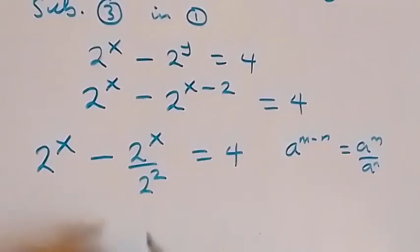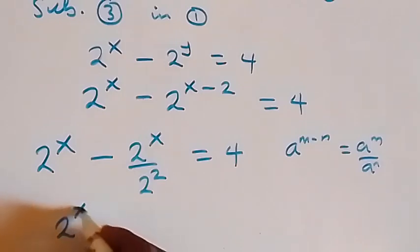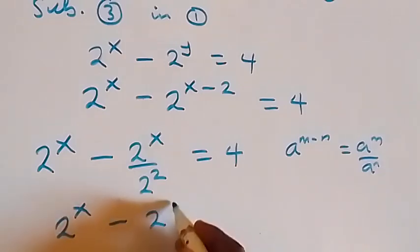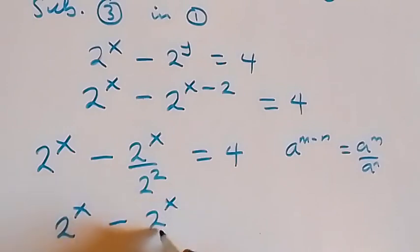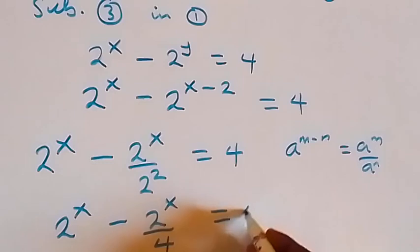Then, 2 raised to power x minus 2 raised to power x over 4 equals to 4.